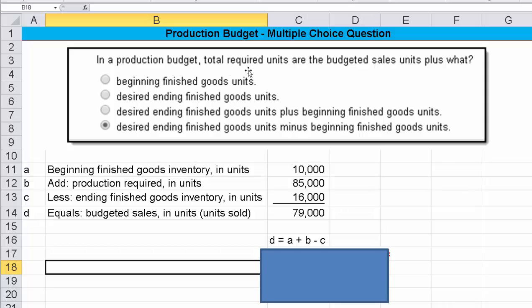Well, total required units is the production required. That's B. So how can we arrange this so that we can solve for B?